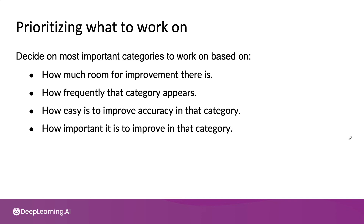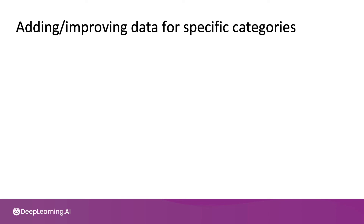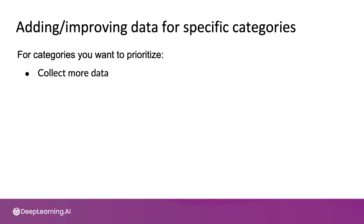Once you've decided that you want to work on one category of data — say data with car noise — or maybe a few categories where you want to improve the average performance, one fruitful approach is to consider adding data or improving the quality of that data for that one or maybe a small handful of categories. For example, if you want to improve performance on speech with car noise, you might go out and collect more data with car noise, or use data augmentation to get more data from that category.